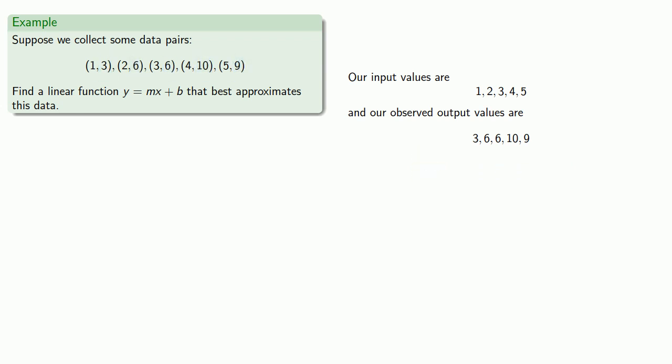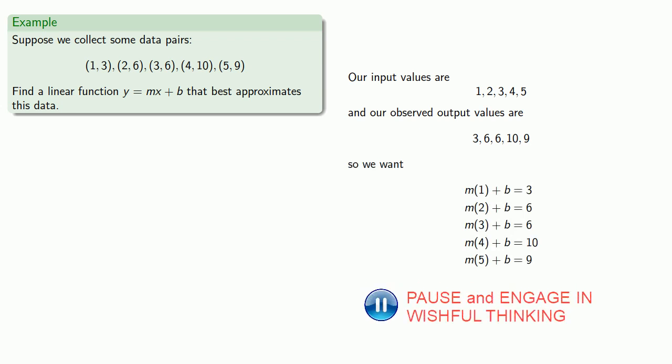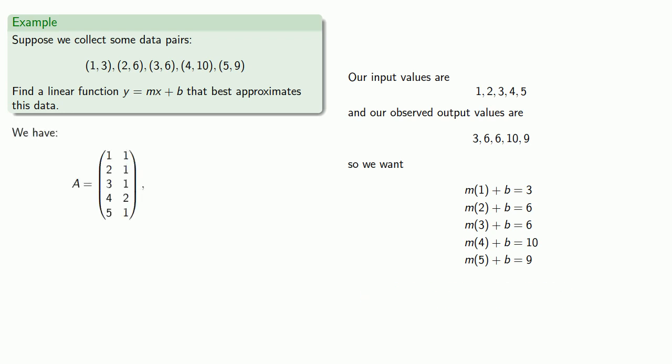And in a perfect world, we want the linear function to give us exactly these output values. And so we'll peel off our coefficient matrix A, our matrix of variables x, and our matrix of constants b. And our goal is to minimize Ax - b, and this requires solving A^T Ax equals A^T b.